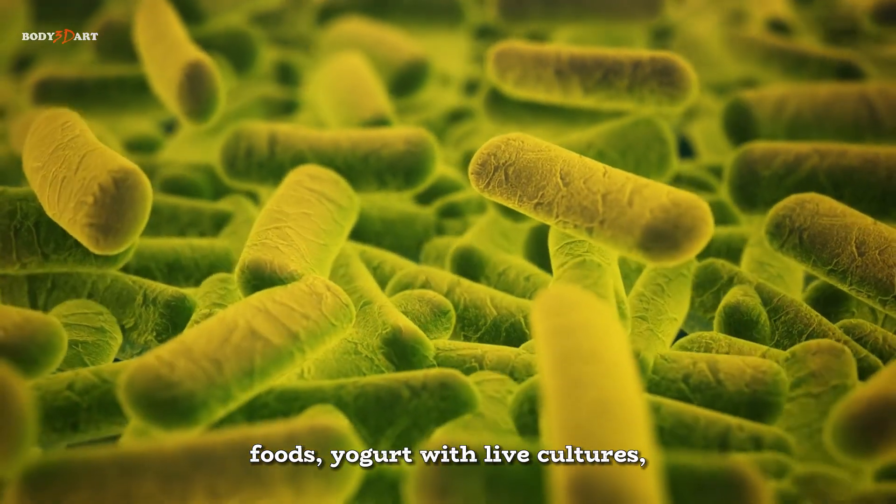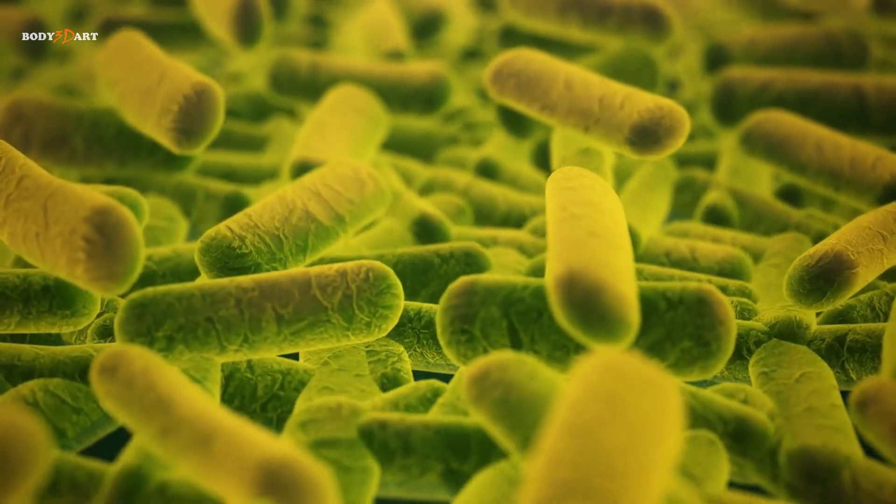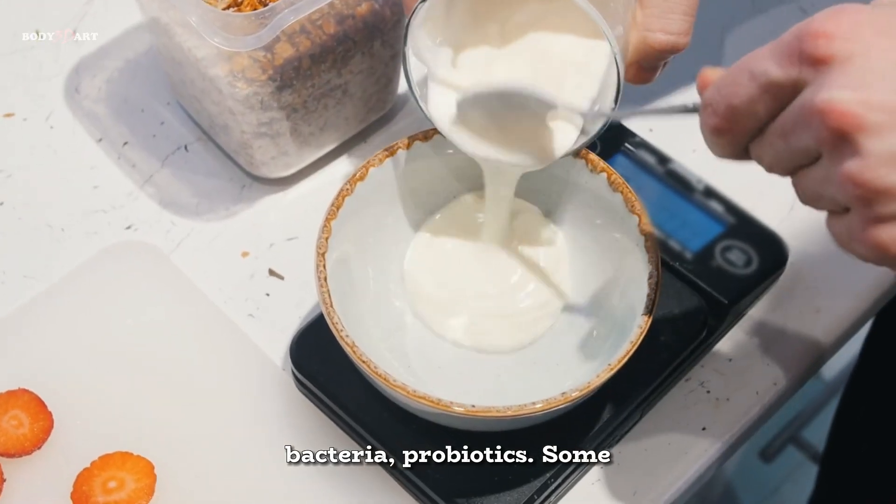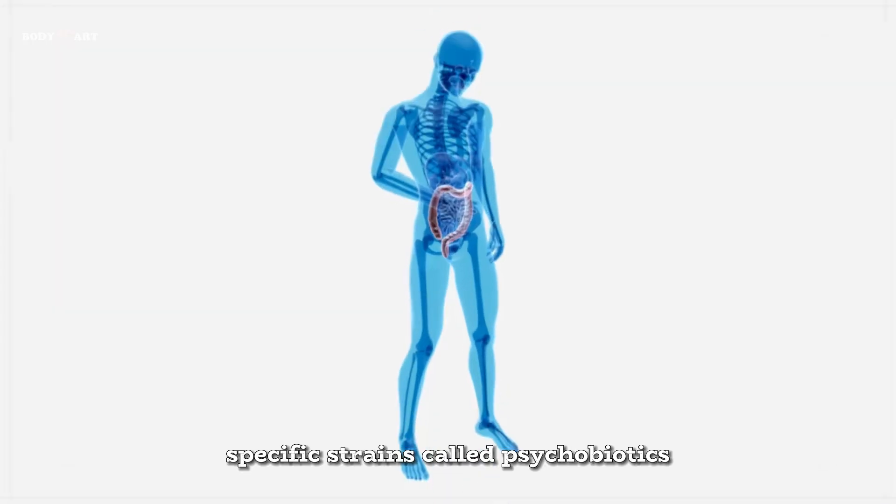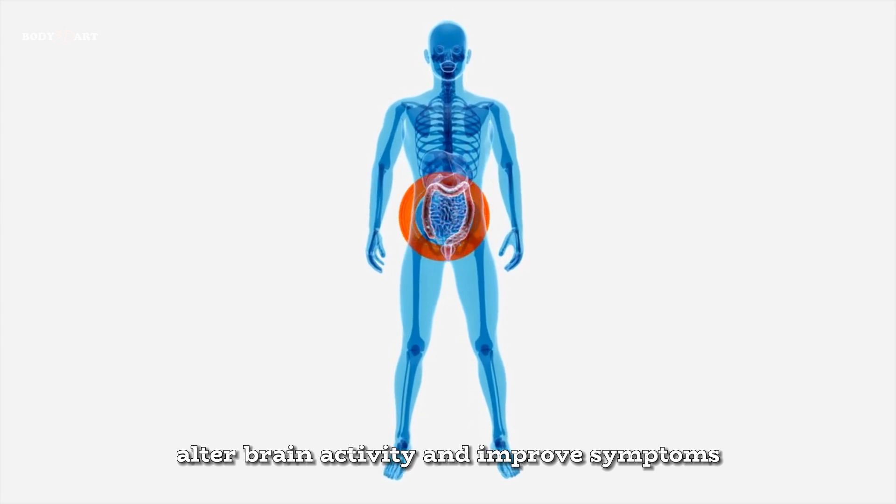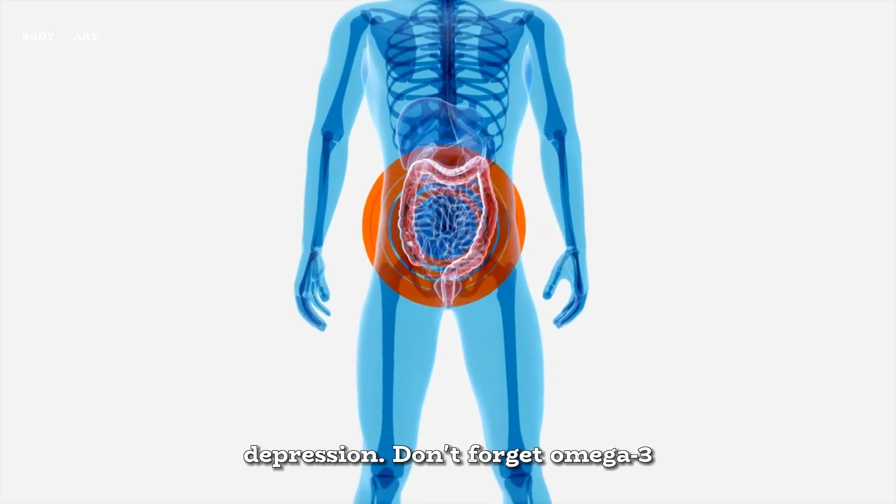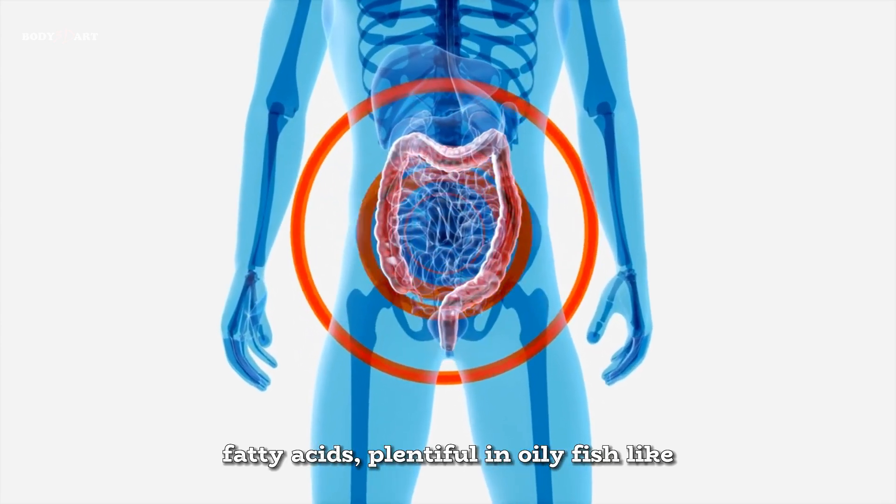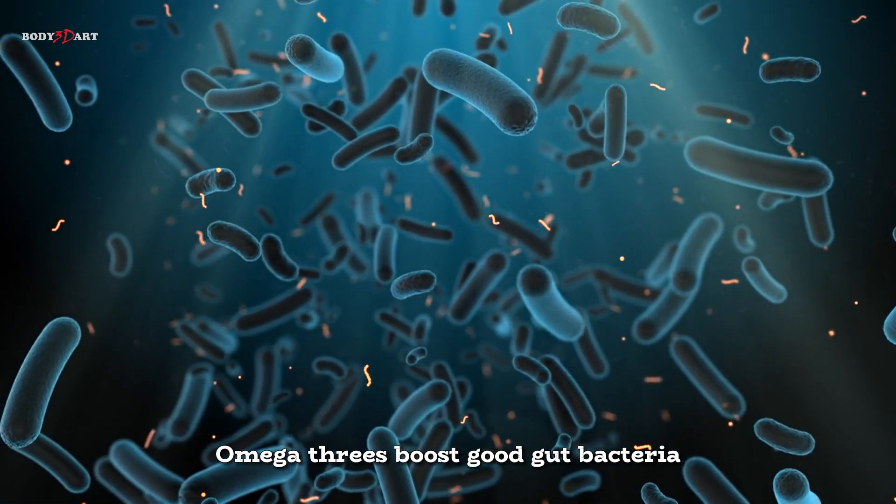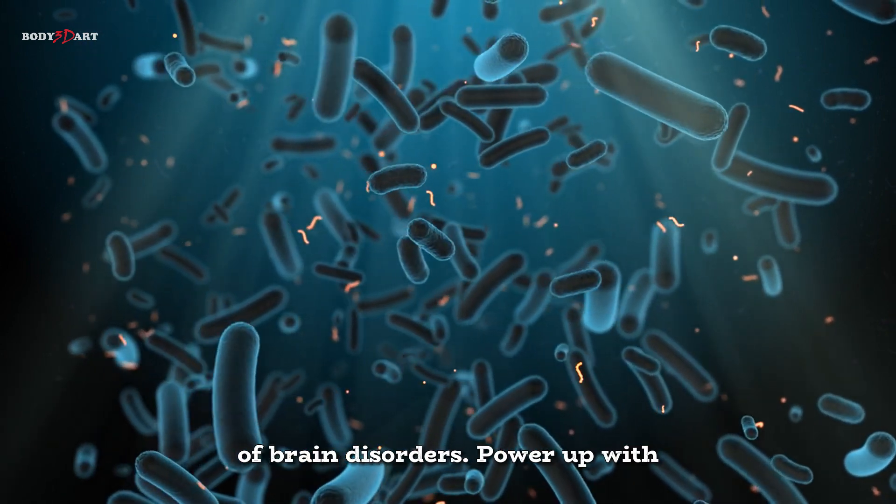Next, dive into fermented foods - yogurt with live cultures, kefir, sauerkraut, kimchi. These are packed with live beneficial bacteria, probiotics. Some specific strains, called psychobiotics, have been shown in studies to actually alter brain activity and improve symptoms of stress, anxiety and depression. Don't forget omega-3 fatty acids, plentiful in oily fish like salmon, mackerel and sardines. Omega-3s boost good gut bacteria diversity and are linked to a lower risk of brain disorders.